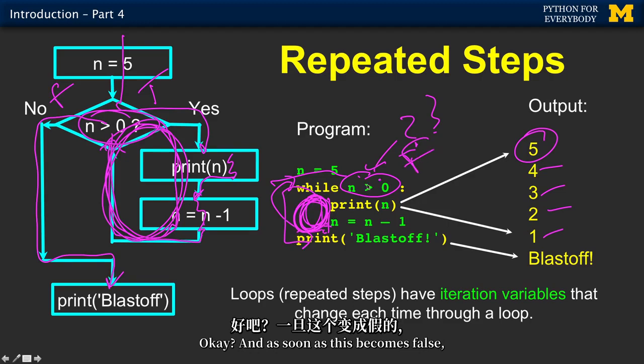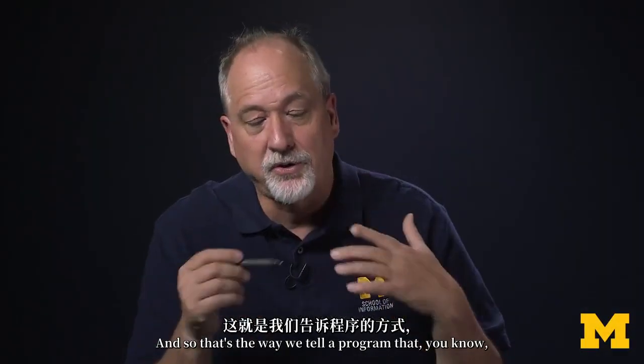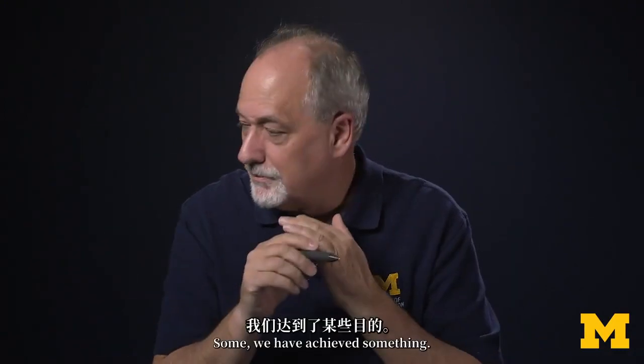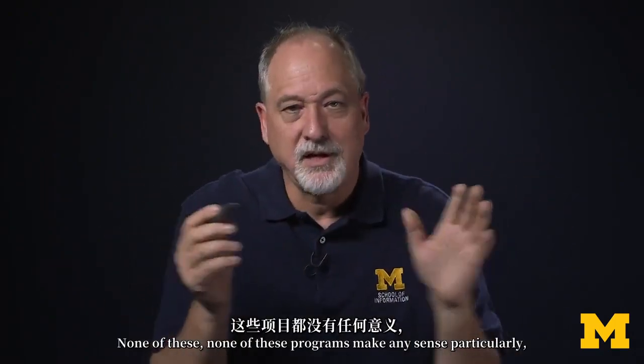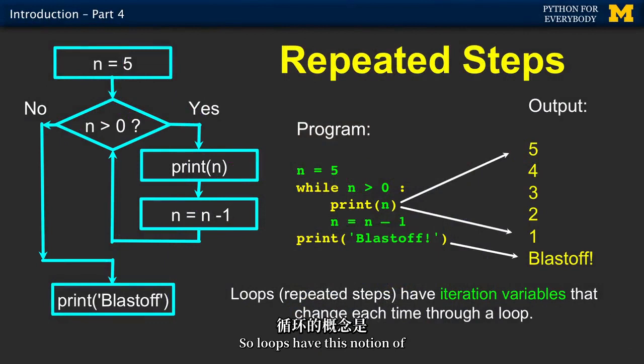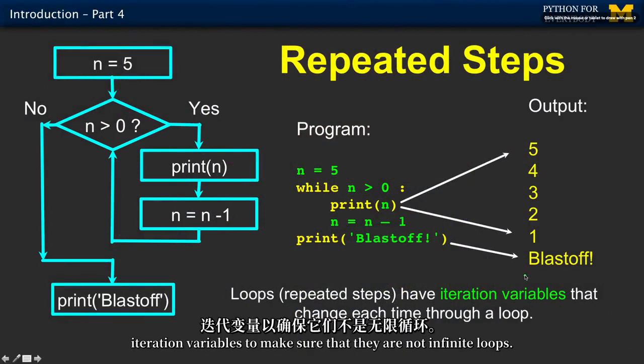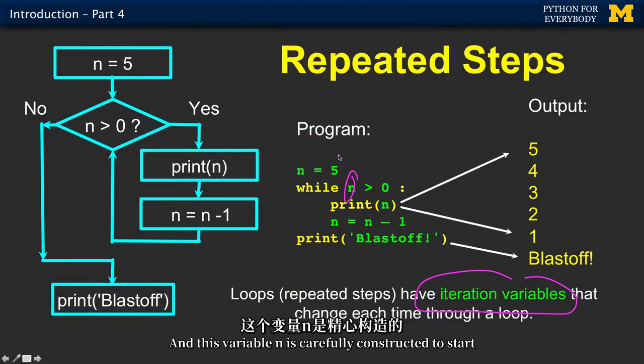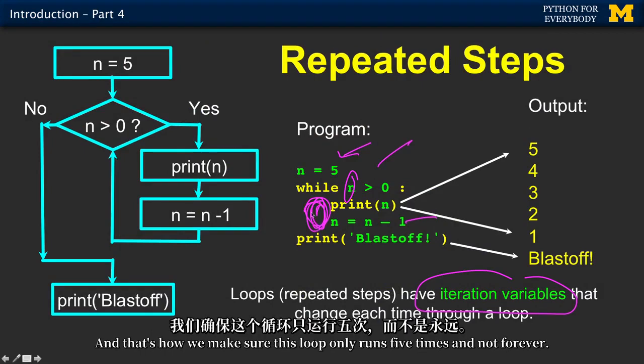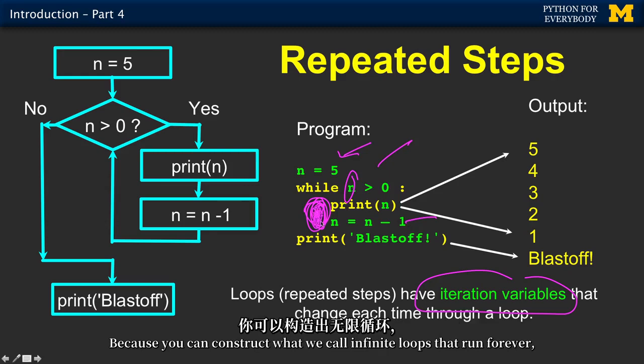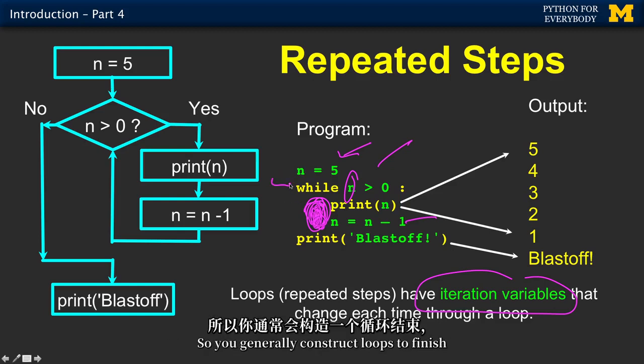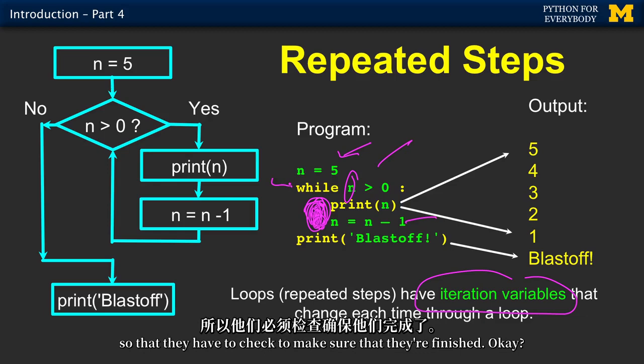That's the way we tell the program, we tell the computer that we want it to keep going until something has happened. We have achieved something. Loops have this notion of iteration variables to make sure that they're not infinite loops. This variable n is carefully constructed to start and be checked and then be changed each time through the loop. That's how we make sure this loop only runs five times and not forever.